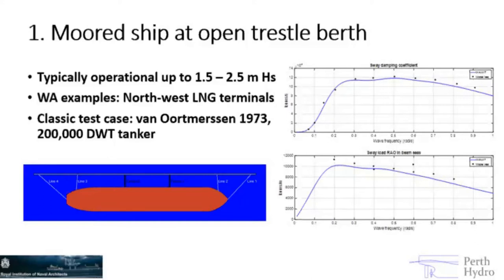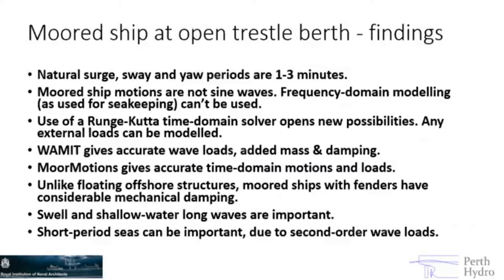We then fed all those loads into MoreMotions, the time domain solver, and compared with the measured motions. The key finding is that for moored ships, the natural horizontal motion periods are very long — generally between one and three minutes. Surge can be quite long and sway normally a bit shorter. So any area where you have long waves present is going to be a problem for moored ship motions. Shorter period waves can also be important once you get second order effects taken into account.